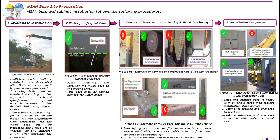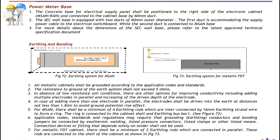Figure 70 shows the fully installed and reinstated amps and protection post. Again, the green circle shows the correct practice to follow whereas the red cross shows improper or incorrect practice which should be avoided. Once the cabinet base is ready with all the steps, the cabinet installation stage arrives — the cabinet is secured and anchored to the base, and the cabinet interface with the base is sealed and water repellent.